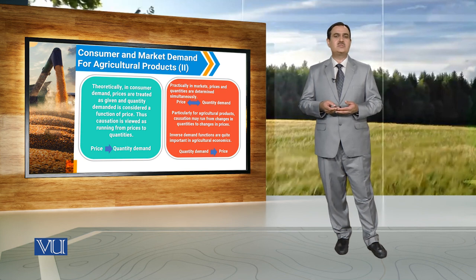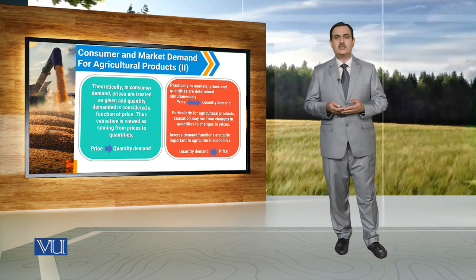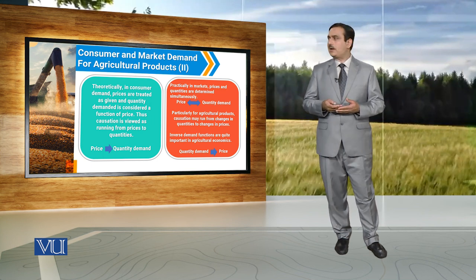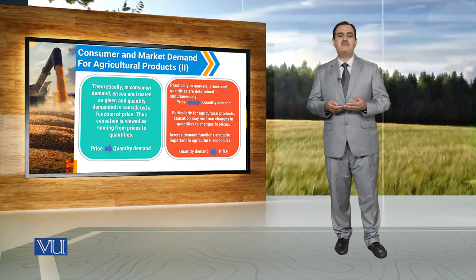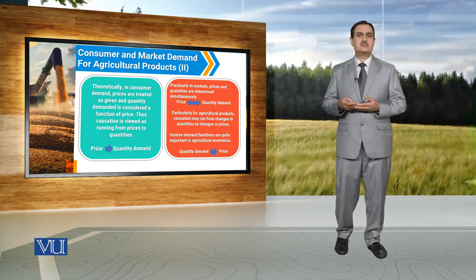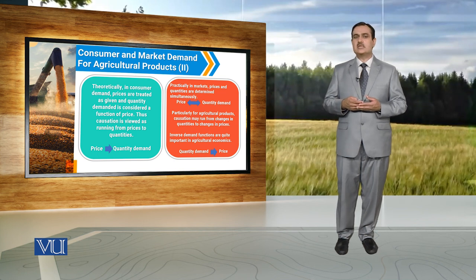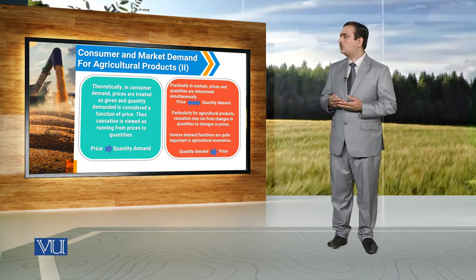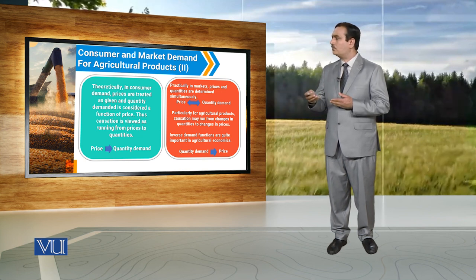Theoretically, when we study consumer demand, we study causation from price to quantity demanded — it is the price that causes change in quantity demanded. But when we discuss the market, there is in fact two-way causation. Not only does price affect quantity demanded, but quantity demanded is also affected by price. Especially with reference to agricultural commodities, this causation is running from both sides.